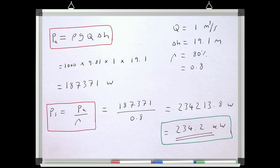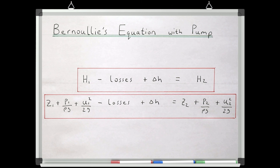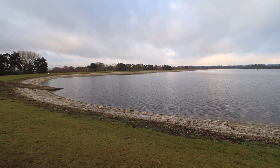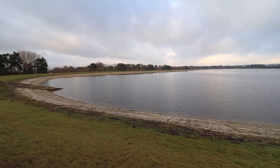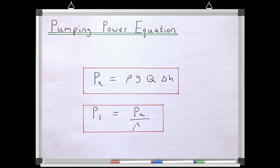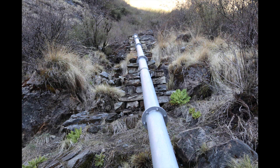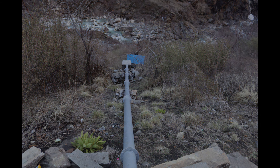Think about all the equations we've used to arrive at this number, and consider how you could alter the system to deliver the same discharge but use less power. In this video we've looked at how to incorporate a pump into Bernoulli's equation, solved for how much pressure head a pump needs to add, and used the pumping equation to find how much power that pump requires. In the next video we'll look at the opposite case — extracting excessive total pressure head using a turbine and converting it into electrical energy.